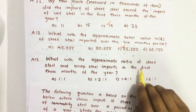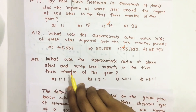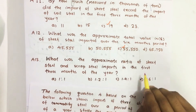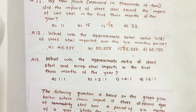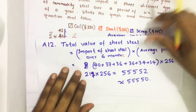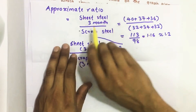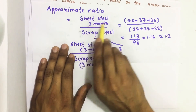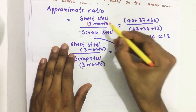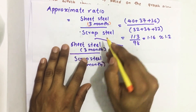The third question: what was the approximate ratio of sheet steel to scrap steel imports in the first three months of the year? We need to find the approximate ratio of sheet steel imports to scrap steel imports for the first three months.